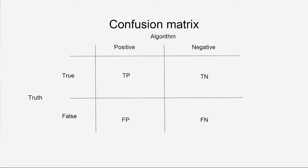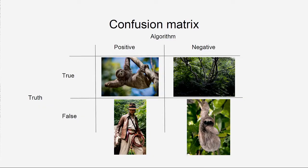Let's introduce the confusion matrix. This tells us how our guesses are distributed. True positive is how many pictures with slots we guessed right. True negative is how many pictures without slots we guessed right. False positive is when we said there is a slot but there isn't. And false negative is when there is a slot but we didn't guess it. These are just numbers — how many of all the pictures we classified each way.